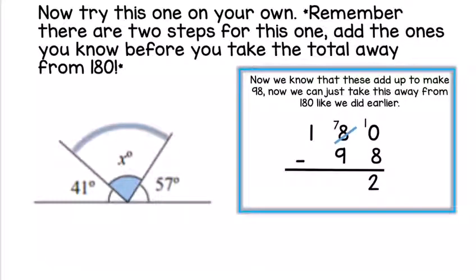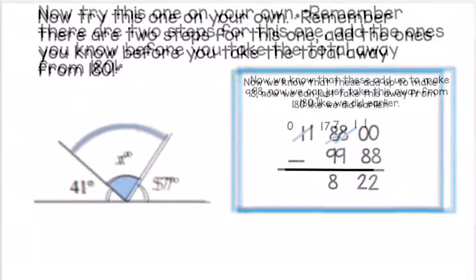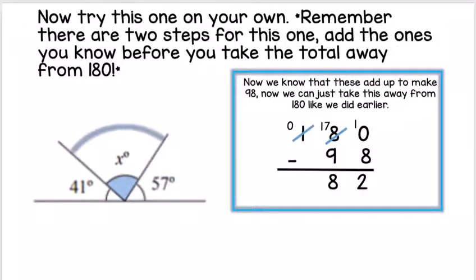10 take away 8 is 2. 7 take away 9 we cannot do, so we need to borrow from the 1 in the hundreds column. Cross out the 1, swap it for a 0, carry over the 1, which turns the 7 into 17. Now 17 take away 9 equals 8, and 0 take away 0 is 0. So our missing angle is 82 degrees.